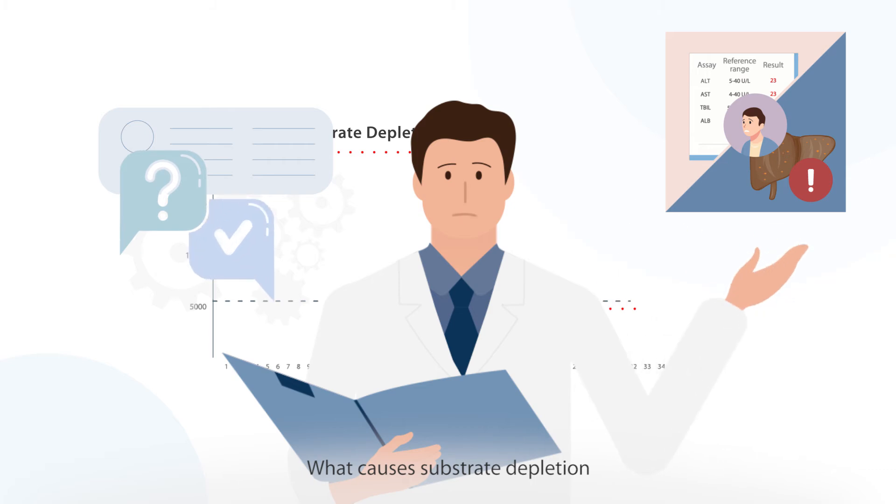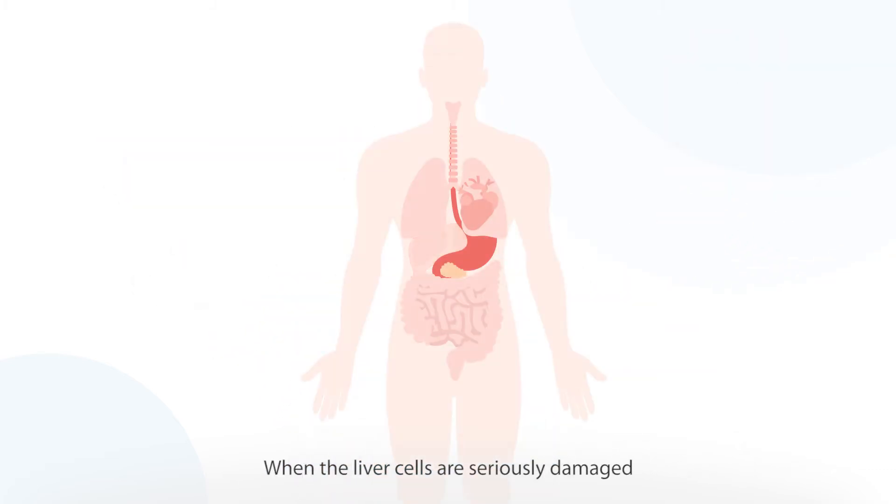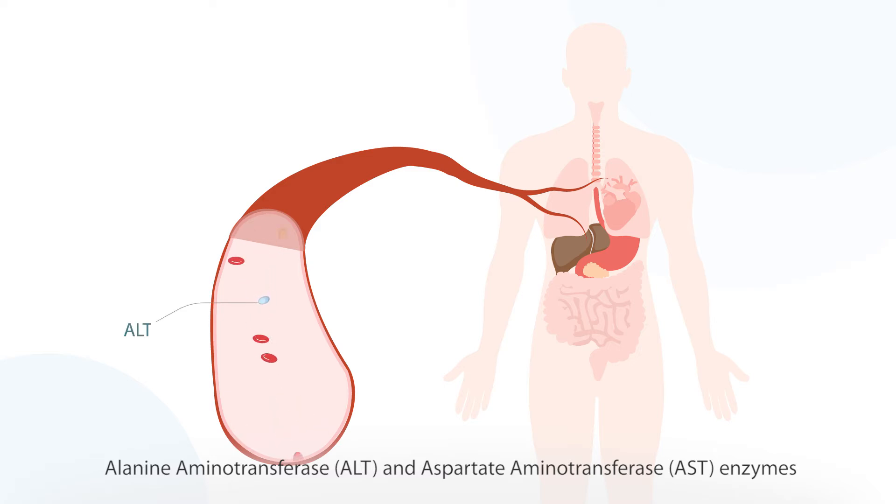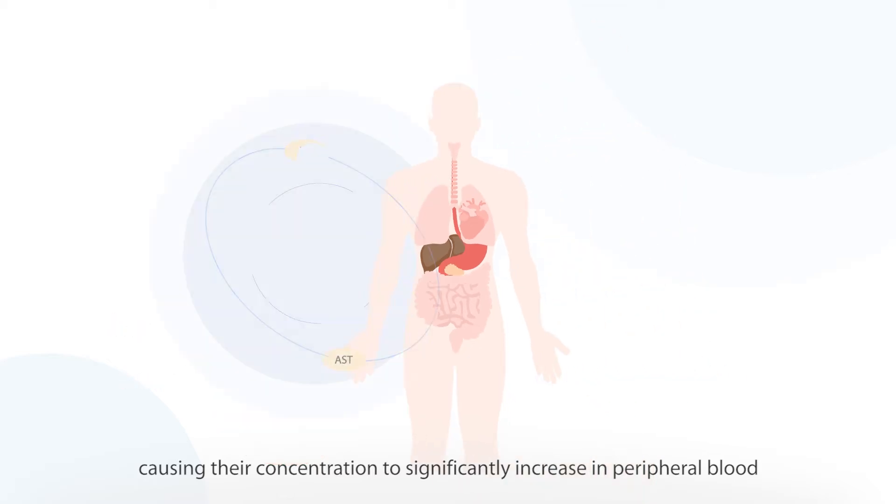What causes substrate depletion? When the liver cells are seriously damaged, alanine aminotransferase and aspartate aminotransferase enzymes are released in large quantities causing their concentration to significantly increase in peripheral blood.